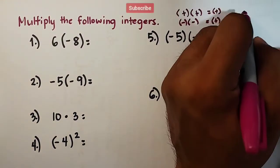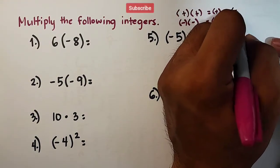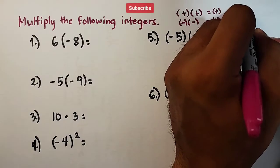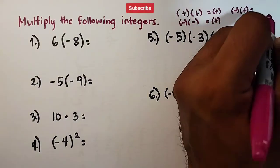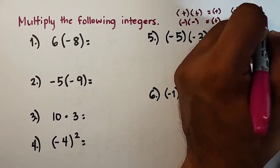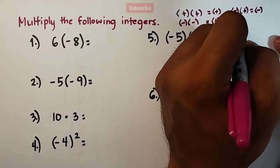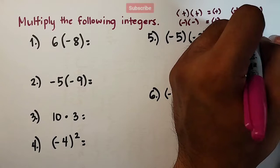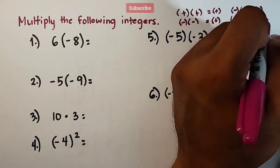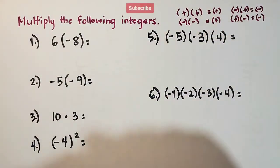And then, if you have a negative integer times a positive integer, that will give you the product of negative integer. If you have positive times another negative, that will give you a negative integer. So, to summarize the rule, this is it.